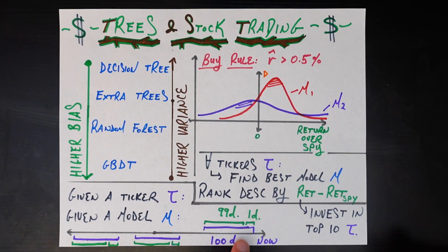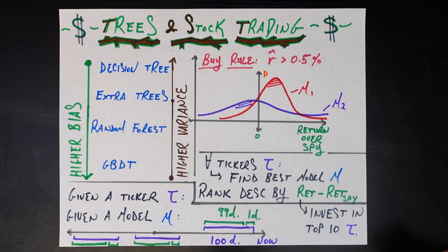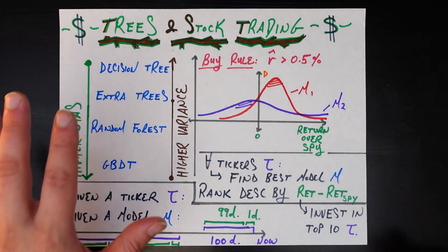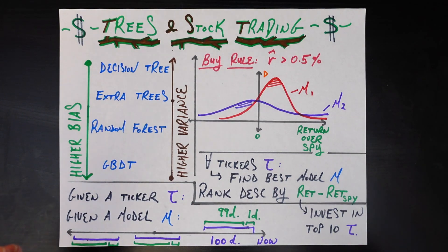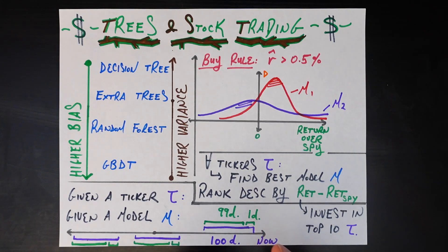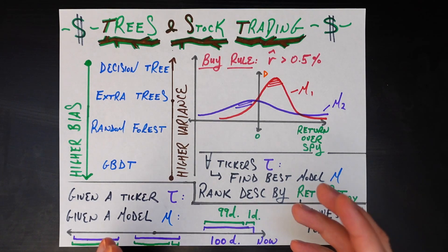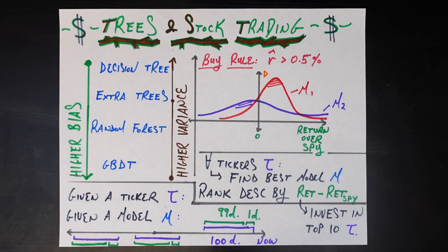How does this work? First we look at one day ago all the way back to a hundred and one days ago — that's the hundred-day purple window. For the first ninety-nine of those hundred days, we train model M — for example, a decision tree. Then we use that trained model, which was trained on those lagged return features with the label being next-day return, to predict what the return would have been for the unseen next day. The rule: if the predicted return R-hat is bigger than positive 0.5%, we buy that stock at the start of the day and sell at the end.